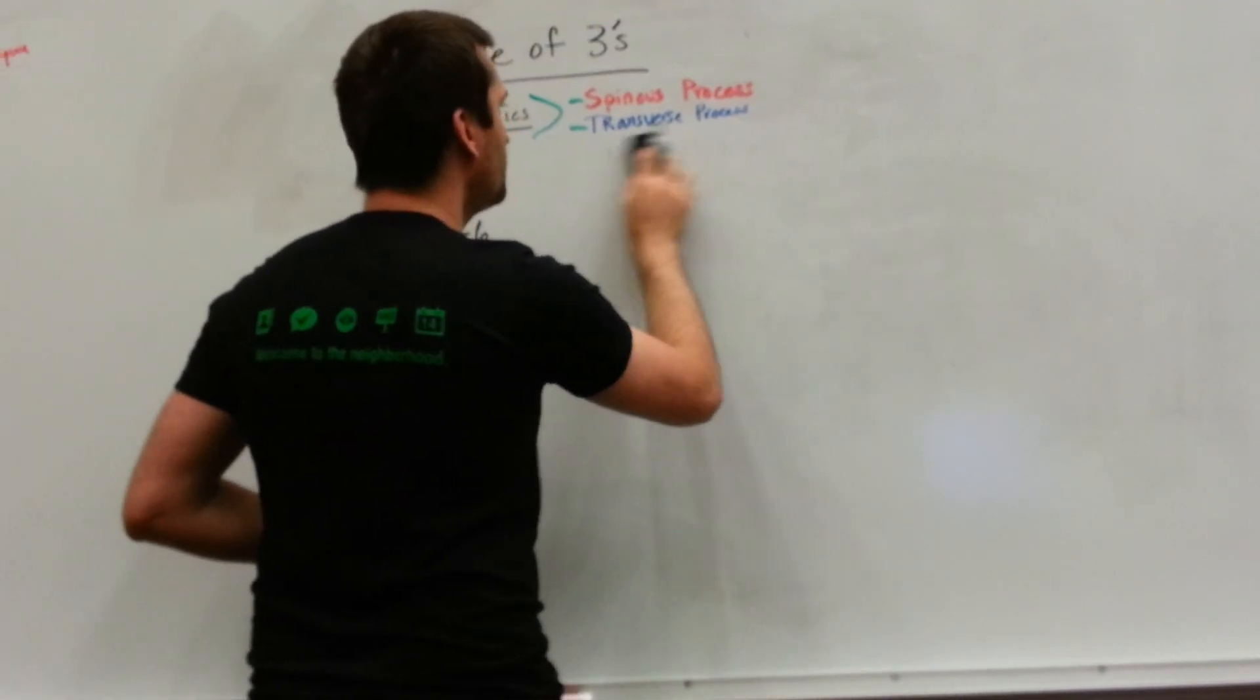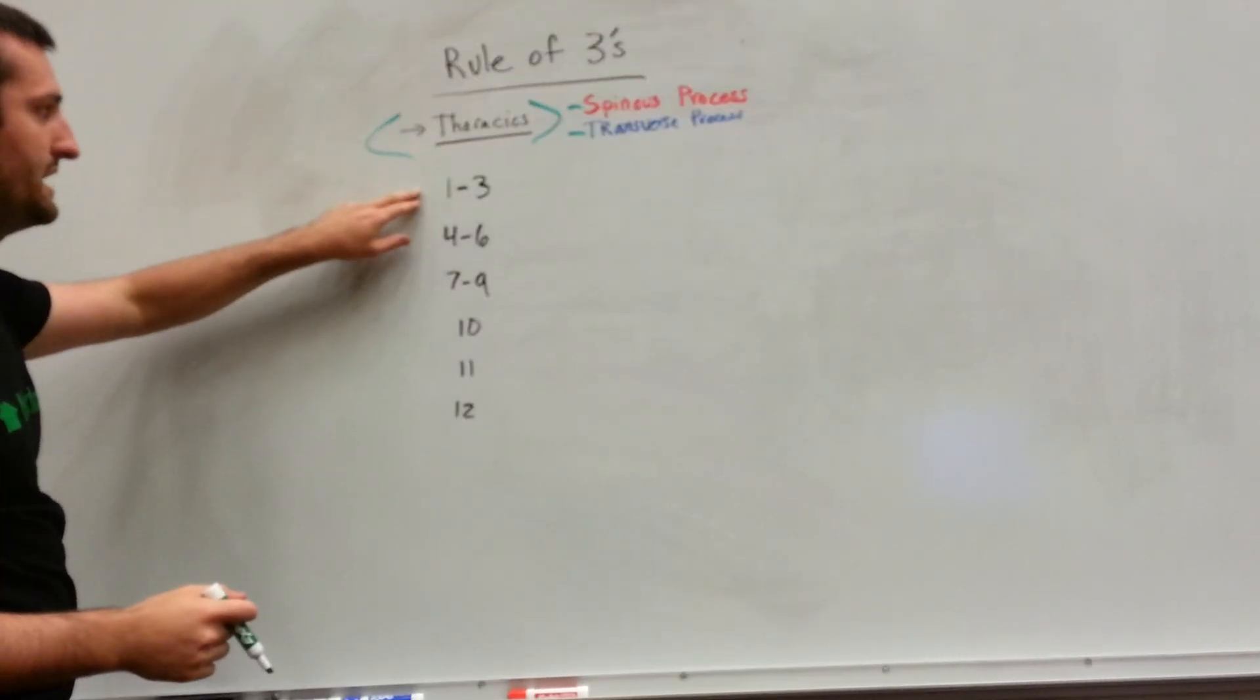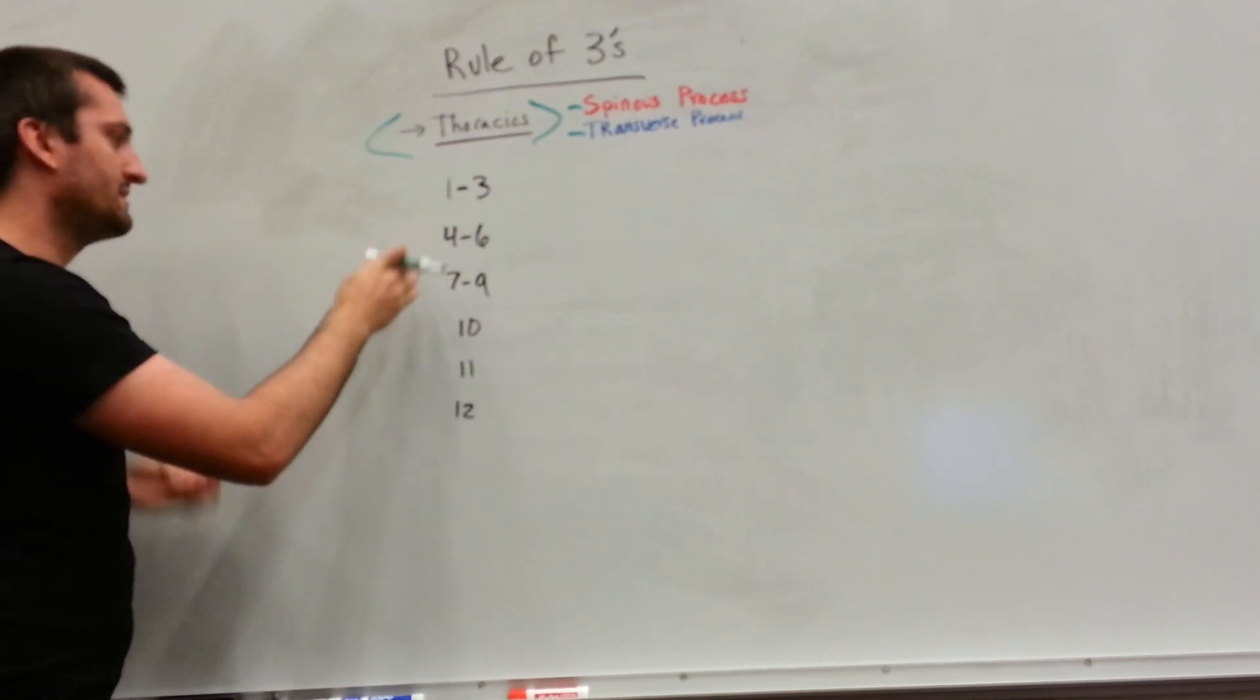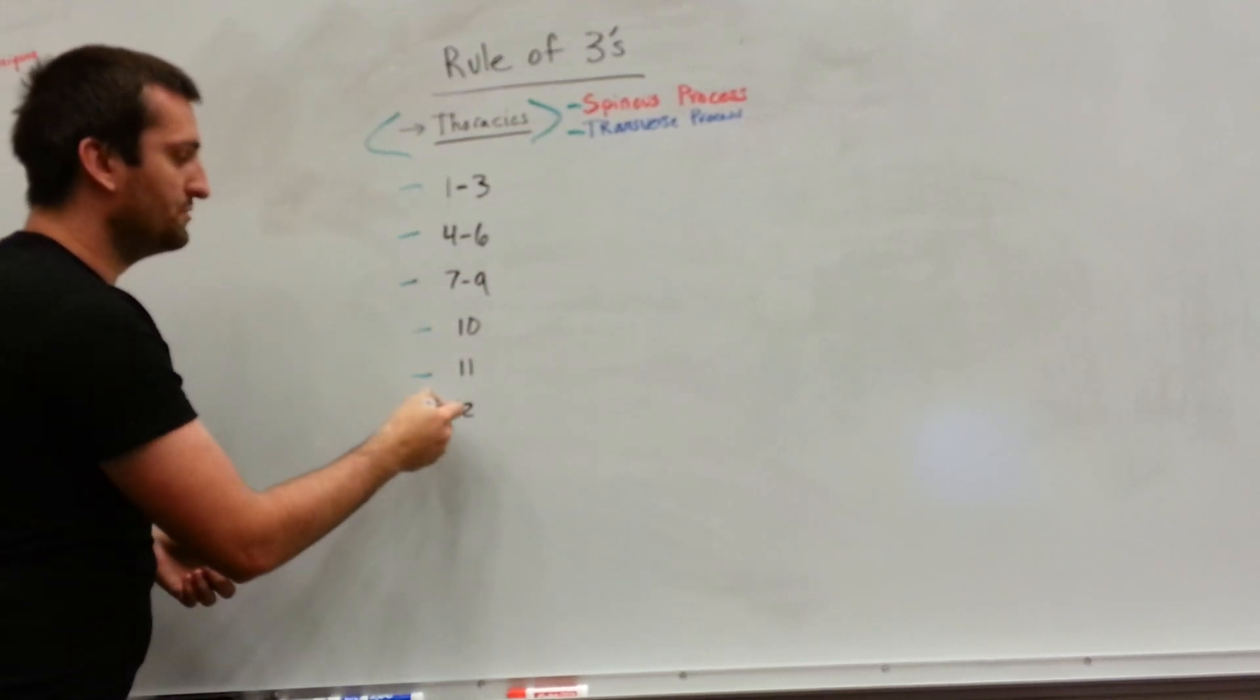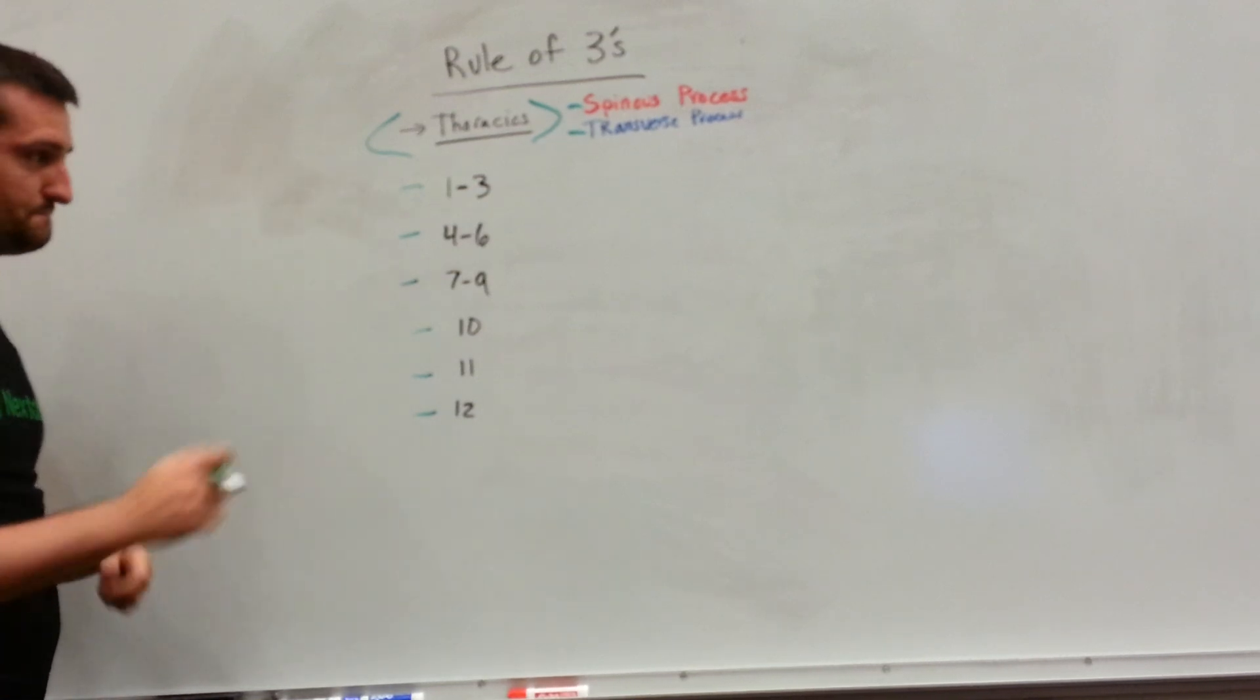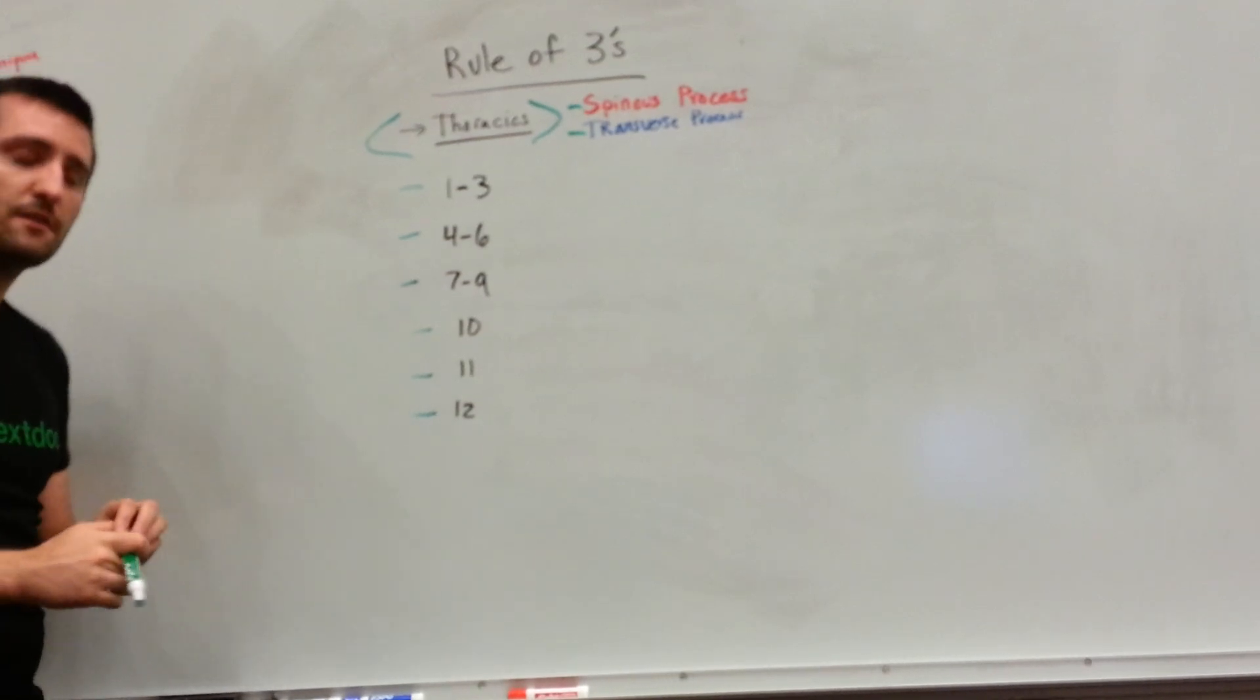So for the rule of threes, what we're going to be doing is we're going to be chopping the thoracic spine into three. So one through three, four through six, seven through nine. Well that's not all of the levels yet. So we're just going to do one, two, and three. So now we have six different topics that we need to talk about. One to three, four to six, seven to nine is where we're going to start.